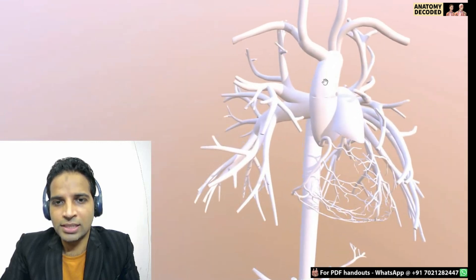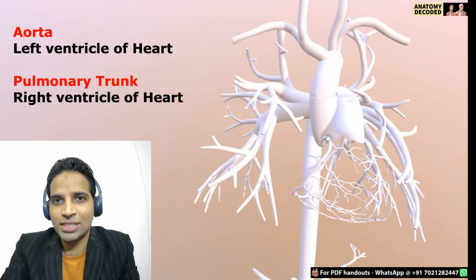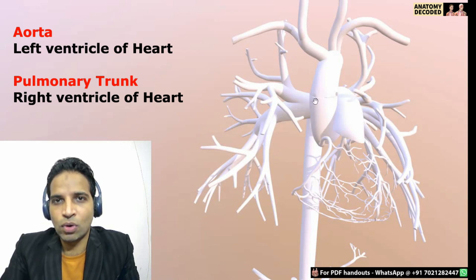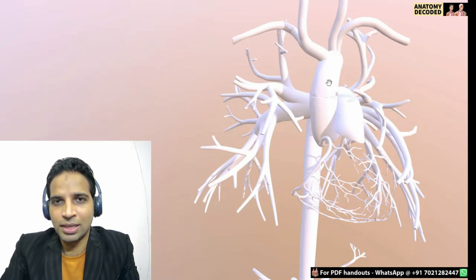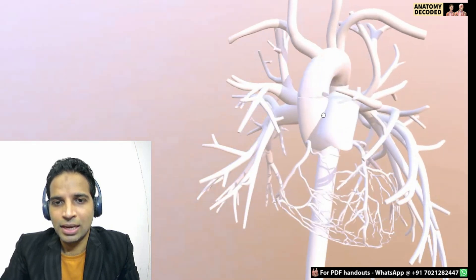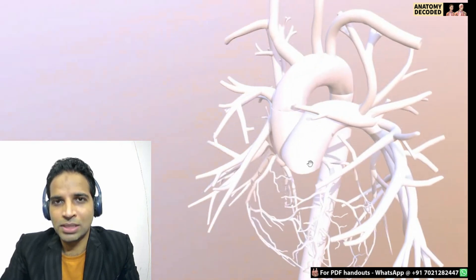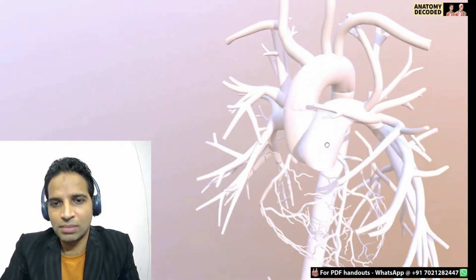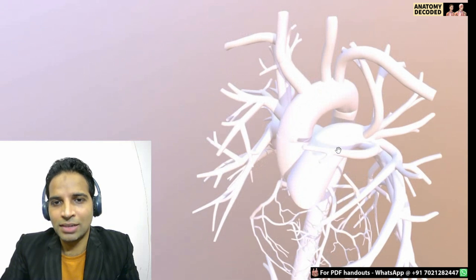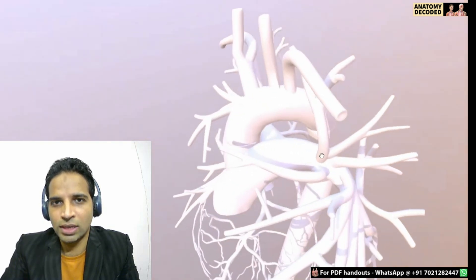Here we can see the aorta which arises from the left ventricle, and this is the pulmonary trunk which arises from the right ventricle. The majority of blood supply to the body is by the aorta. The pulmonary trunk — the word 'pulmon' refers to the lungs — supplies the lungs and divides into the left and right pulmonary artery for each lung.